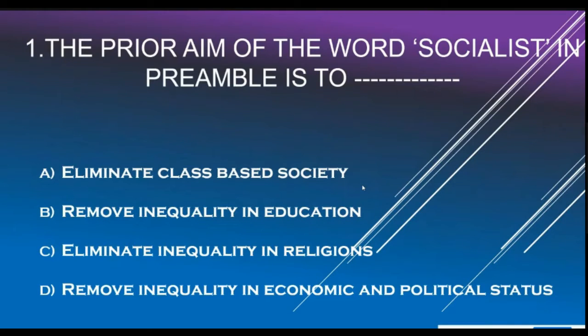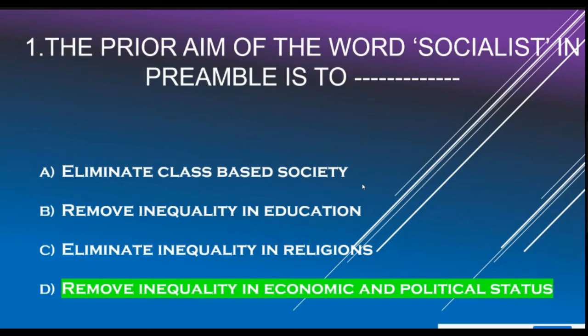First question. The primary aim of the word 'socialist' in the Preamble is: Option A - Eliminate class-based society. Option B - Remove inequality in education. Option C - Eliminate inequality in religions. Option D - Remove inequality in economic and political status. Correct answer is Option D: Remove inequality in economic and political status.